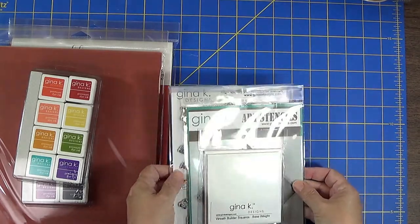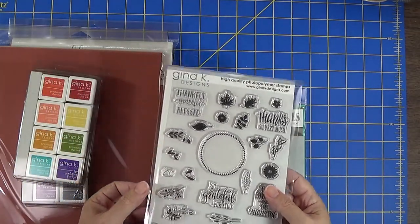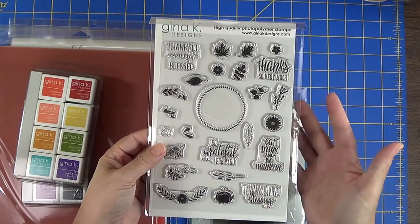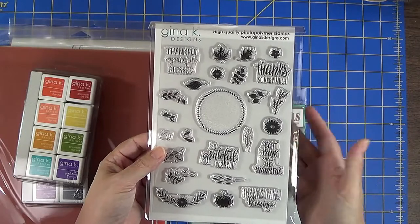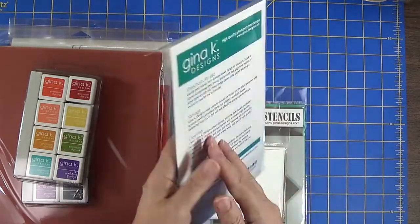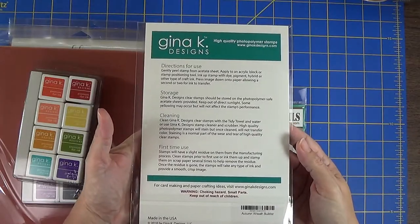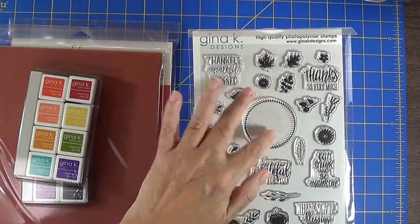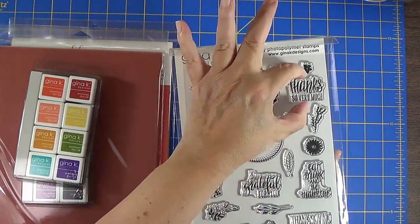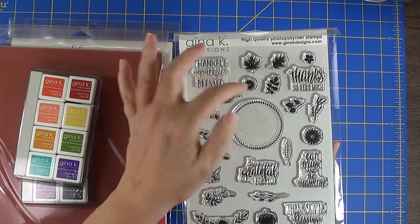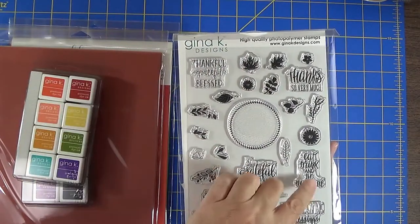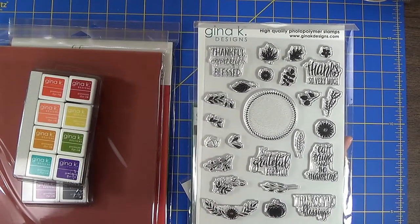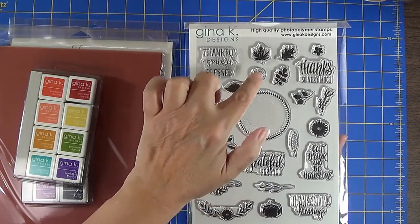What really got me interested in ordering from Gina K is their wreath builder program or designs or whatever. It's just so cool. I love the concept. So the set that I got is the autumn wreath builder set and this has a great focal point here that it looks like the sentiments should fit into and there's thankful, grateful, blessed, thanks so very much, eat drink and be thankful. I like that one. Thanksgiving blessings and so grateful for you along with some fall designs.